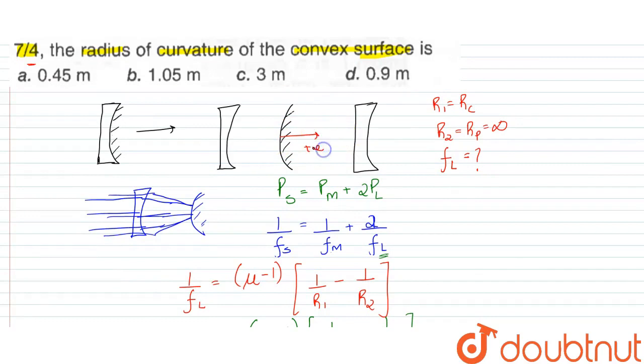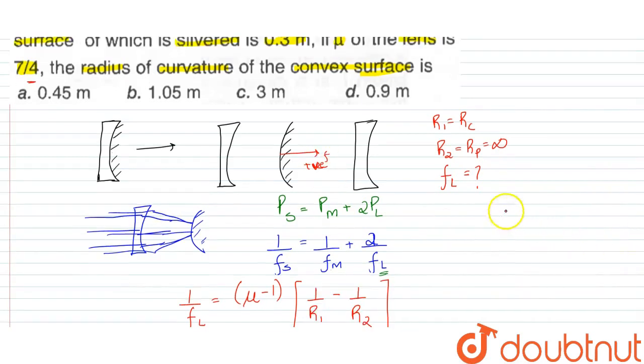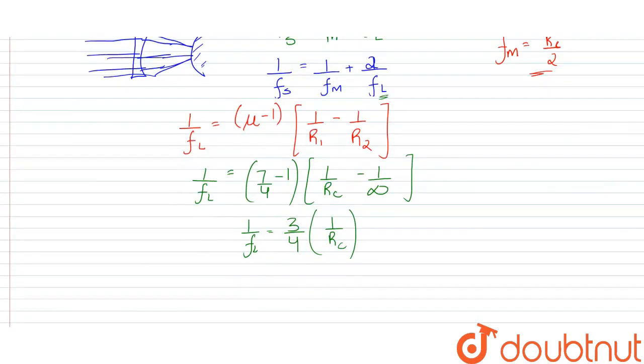For the mirror, since the radius of curvature is R_c, the focal length is f_m = R_c/2. So 1/f_m = 2/R_c. For the system: 1/f_s = 1/f_m + 2/f_L = 2/R_c + 2(3/4R_c) = 2/R_c + 6/(4R_c).